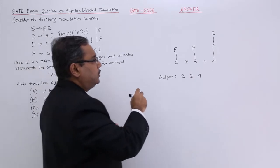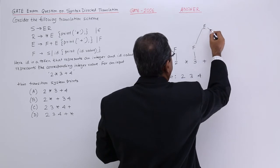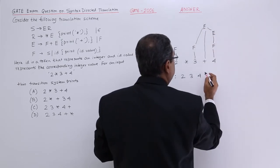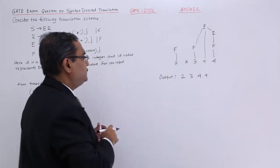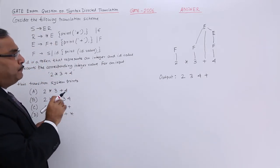That is the semantic action. I shall go for E produces F plus E and that will print this particular plus. That will print this particular plus there.